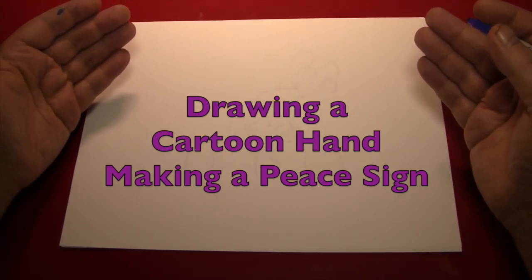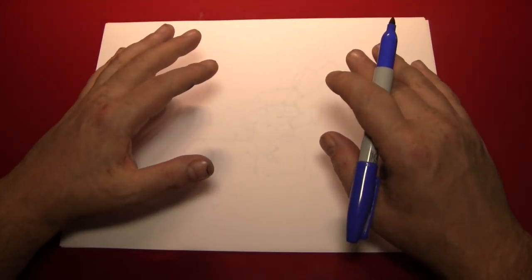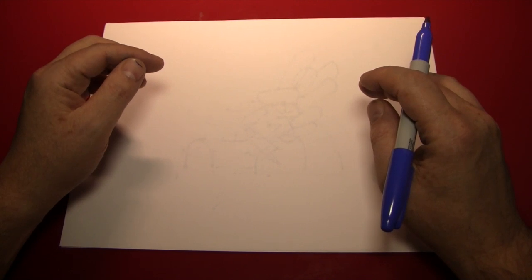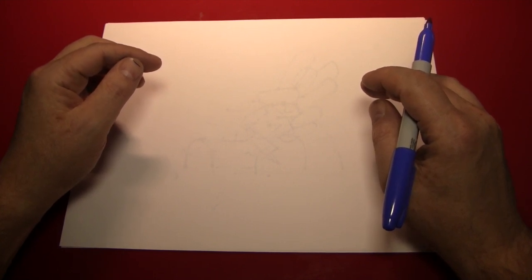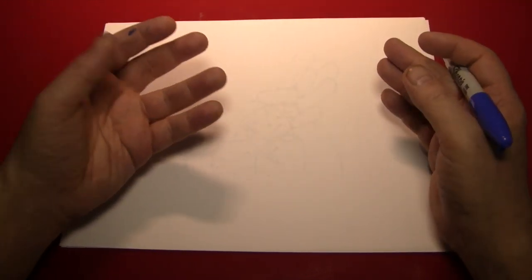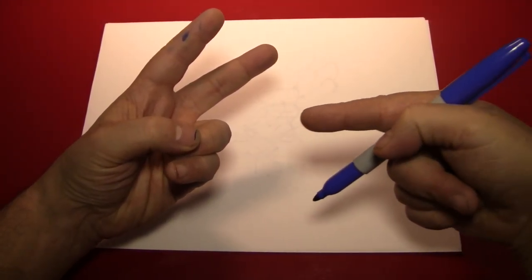Now in a previous episode I drew a simple cartoon hand and if you want to see that I put the link in the comments below. But today we're going to be drawing a cartoon hand making a peace sign which looks like that. So let's get started.